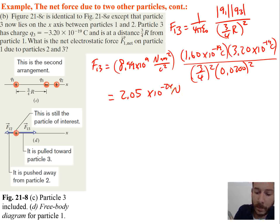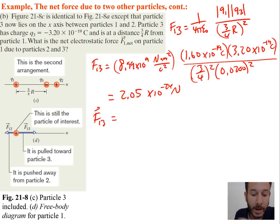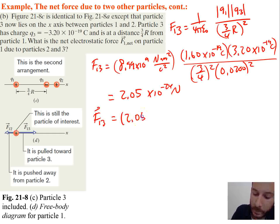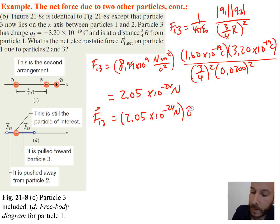Now we put F13 in vector form. Since one charge is positive and one is negative, there's an attractive force, meaning the force on Q1 is to the right — a positive direction. So in vector form it's positive 2.05 times 10 to the negative 24 newtons in the î direction.